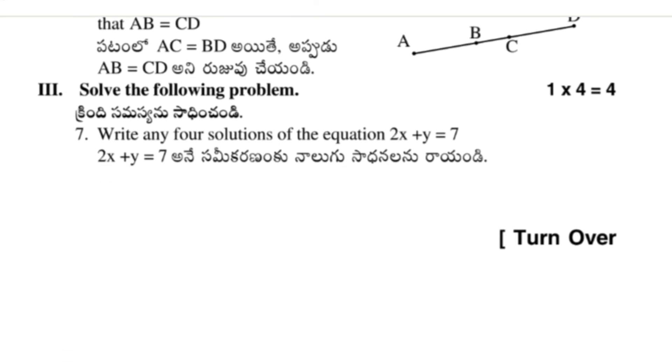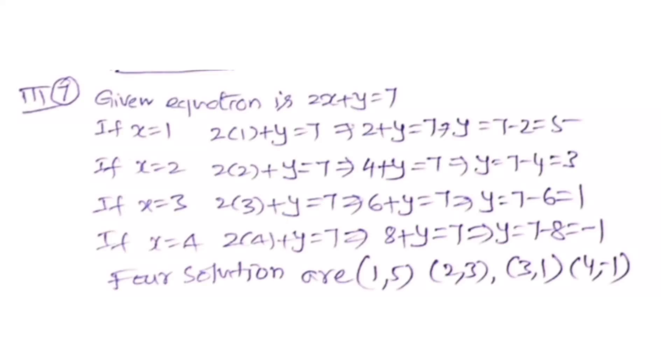The equation is 2x plus y equal to 7. The answer is here—these are the four solutions for the given equation, which is 2x plus y equal to 7. Pause the video and write the answers.